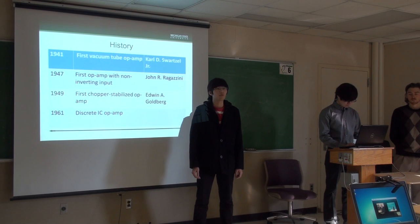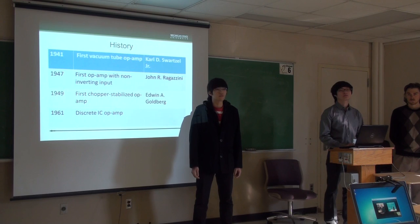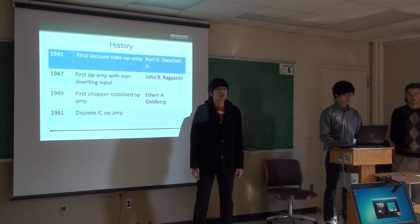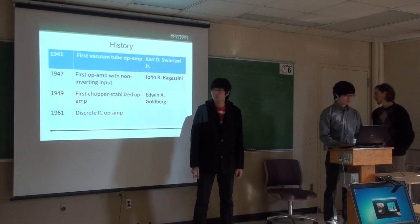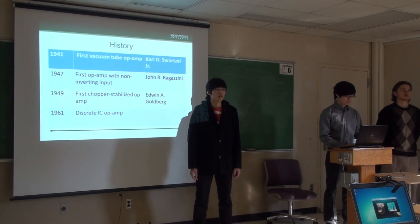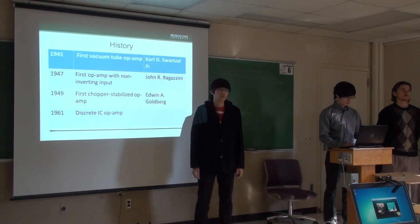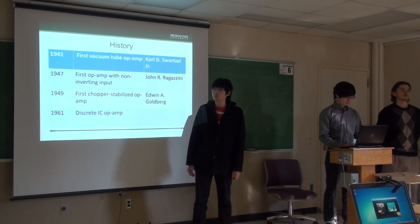This particular op-amp consists of three vacuum tubes. It operates on positive and negative 350 volts and has a gain of 90 dB. That early op-amp had only one inverting input instead of differential inverting and non-inverting inputs, which are very common today. The first op-amp with a non-inverting input came out in 1947.